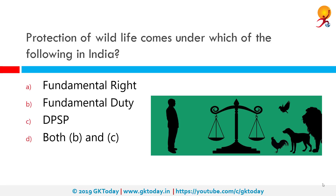Protection of wildlife comes under which of the following in India? The correct answer is both fundamental right and fundamental duty. When the constitution of India was adopted in 1950, the framers had not foreseen the importance of environmental preservation. However, it is now enshrined in Article 51AG of the constitution that it shall be the fundamental duty of every citizen to protect and improve the natural environment including forests and wildlife.